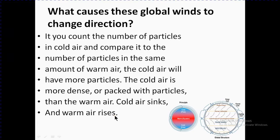Cold air sinks and warm air rises. Why? Because due to more particles in cold air, it becomes denser and goes down. Warm air has fewer particles and rises up. You can see here the cold poles and the warm equator.